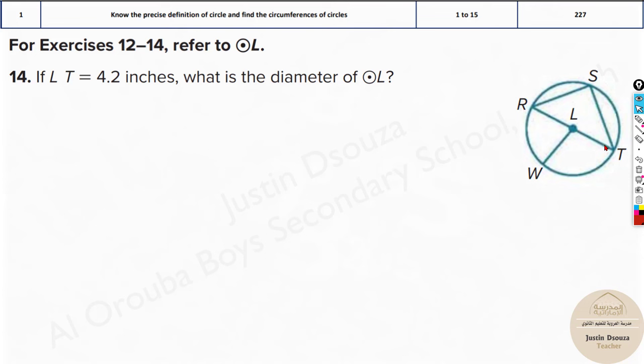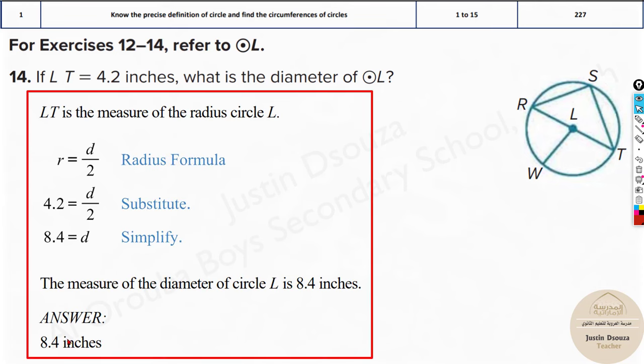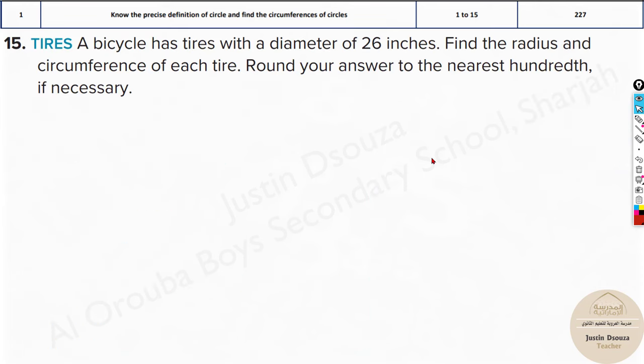And over here, we have LT is 4.2 inches. The radius is given. What's the diameter? Multiply this by 2. It's 8.4. That's it. Very straightforward problems, this one.